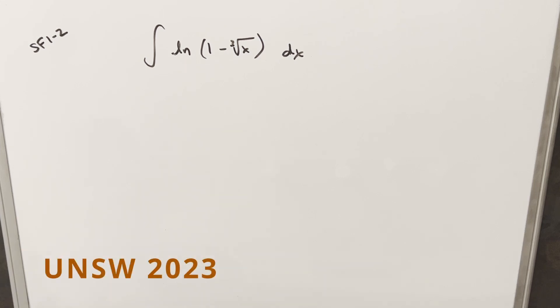Okay, we have here another integral from the UNSW integration meet 2023. This was semi-final round one problem two. We have the integral of natural log one minus cube root of x dx.